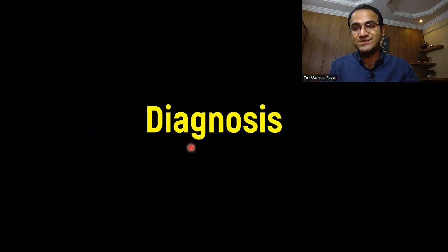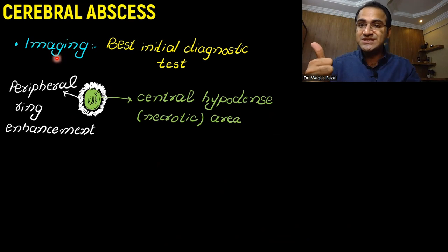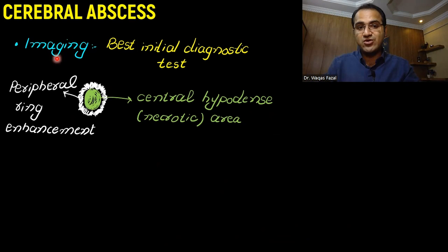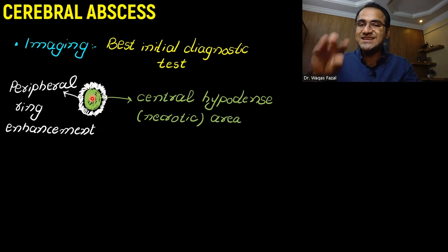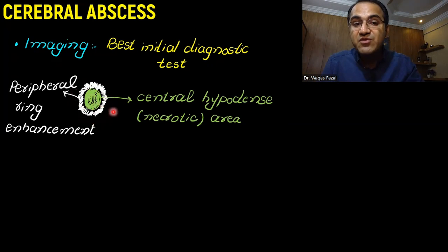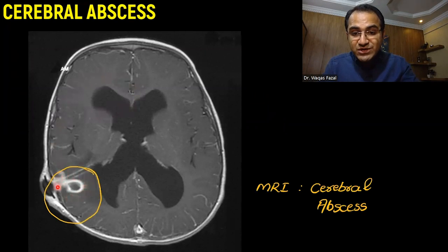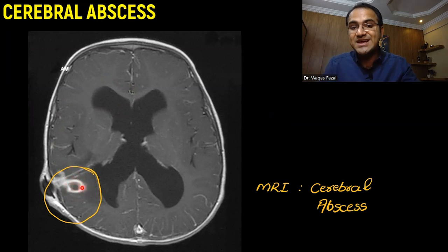Coming to the diagnosis of cerebral abscess: imaging is the best initial modality, and MRI is the most accurate test. CT can be done in an emergency, but MRI gives a more detailed picture. On MRI, you would see a central hypodense area and a peripheral ring enhancement — the central area is the necrotic area. Now we will see a picture of MRI in which you can appreciate the ring of enhancement and the central necrotic area. This is the classical picture of cerebral abscess.